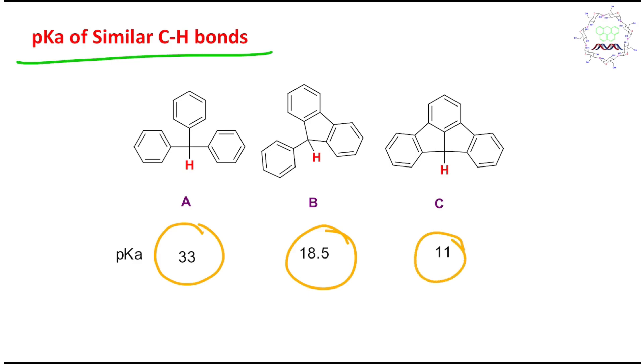By the way, there is a huge surprise. Sir, all are sp3 C-H, all are attached to these three phenyl rings. But in this case, this structure A has pKa 33 and this structure C has 11, almost one-third. Why this unique? What makes this unique acidity of this molecule?